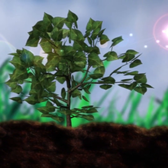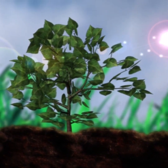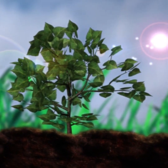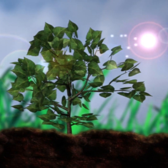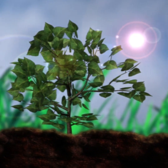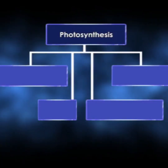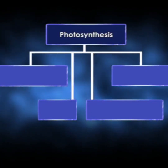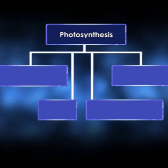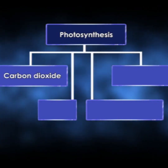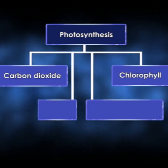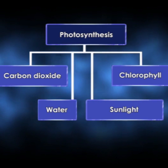Green plants are producers and carry out the process of photosynthesis, in which green plants absorb solar energy to make food from carbon dioxide and water. The factors needed for photosynthesis are carbon dioxide, chlorophyll, water, and sunlight.